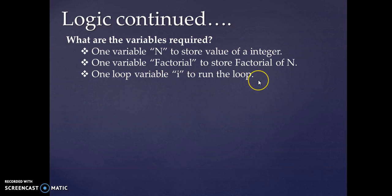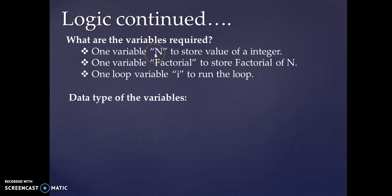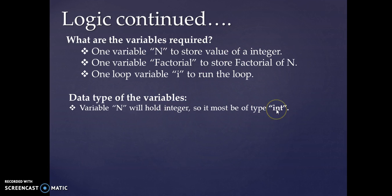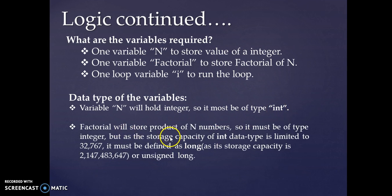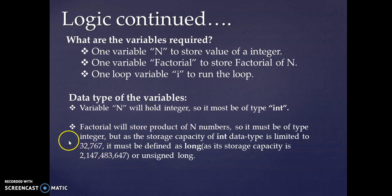What are the data types of the variables? Since n is an integer, it should be of type int. The variable factorial will store the product of n numbers, so it must also be an integer type. However, the storage capacity of int is limited to 32767, which is too small — for example, finding factorial of 13 would be insufficient. So we need a data type with greater storage capacity, such as long or unsigned long.